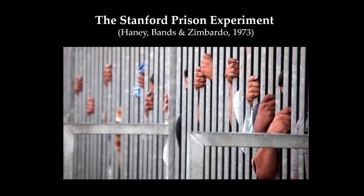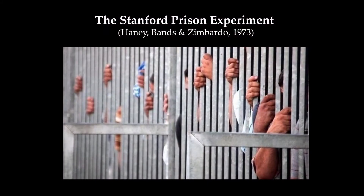One of the most famous — or infamous — examples of power relationships, particularly in groups, comes from a study conducted by Haney, Banks, and Zimbardo, which many people now refer to as the Stanford Prison Experiment.